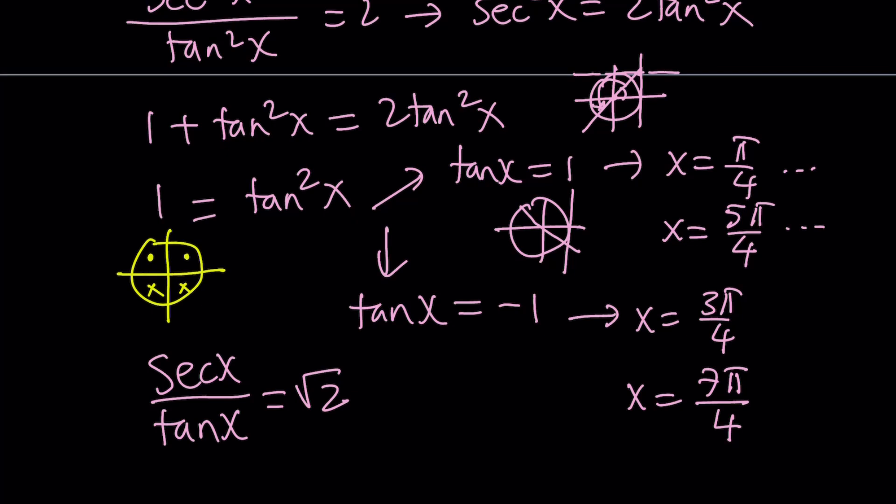So we're only going to accept solutions that are in the first and second quadrant. And so we're going to reject 5 pi over 4, because it's in the third quadrant. And 7 pi over 4 is in the fourth quadrant. We're also going to reject that and go with pi over 4 and 3 pi over 4 as our solutions between 0 and 2 pi.